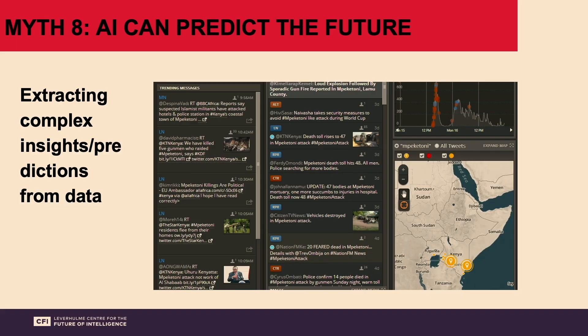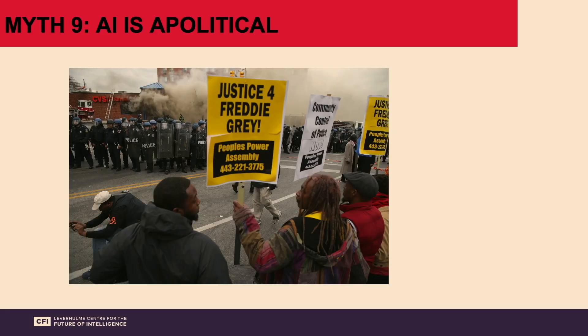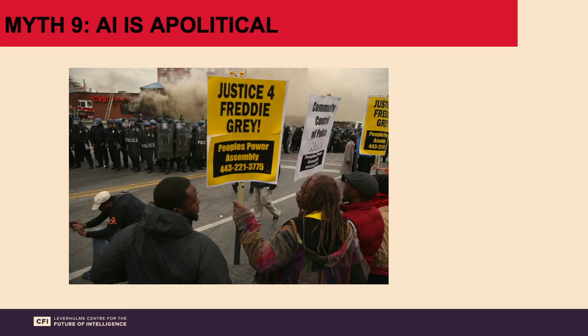Myth eight: AI can predict the future. The UK government has spent five million pounds on a technology called DataMiner, a predictive policing software that tracks and monitors protests and claims it can detect when a crowd is likely to turn violent. But this technology was trained on Black Lives Matter protests in the US, and is more likely to flag crowds with signs saying 'Justice for Freddie Gray,' '#BLM,' or 'Defund the Police' as likely to turn violent. This also shows us that AI is always political, especially when used by politicized clients like the police.